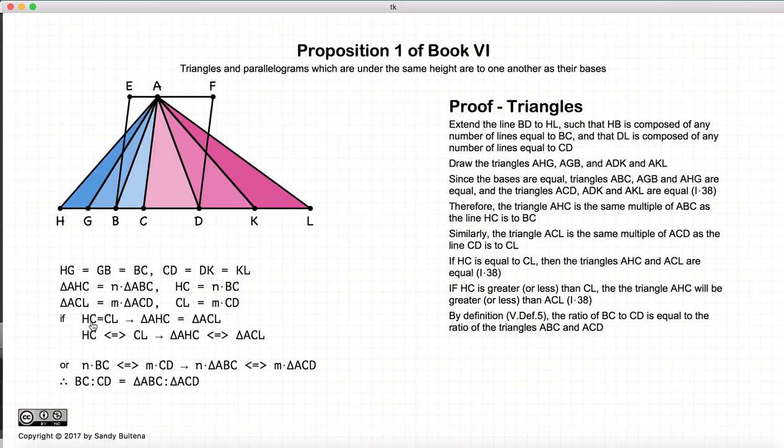However, HC is equal to N times BC. So take HC and put N times BC. CL is equal to M times CD. So we write that here. Triangle AHC, replace that with N times ABC and so on and so forth.